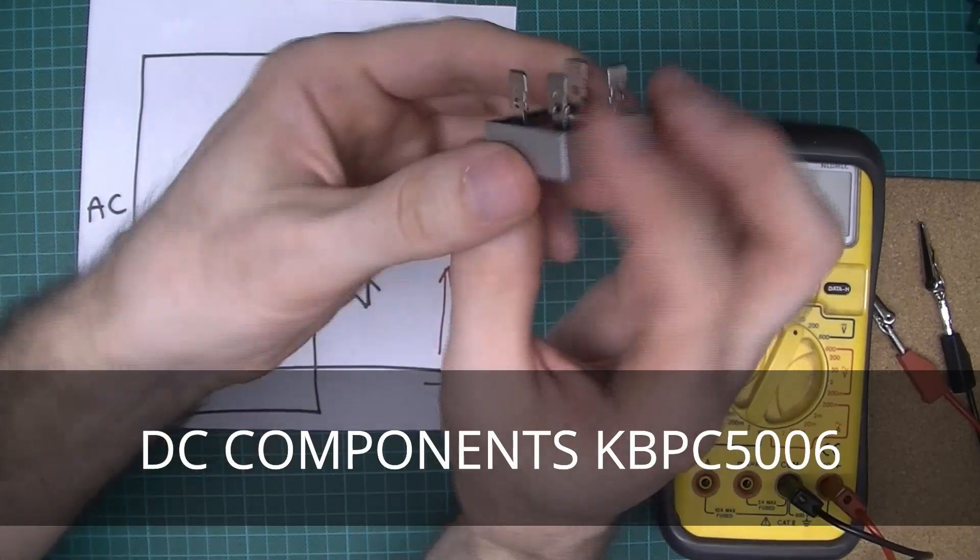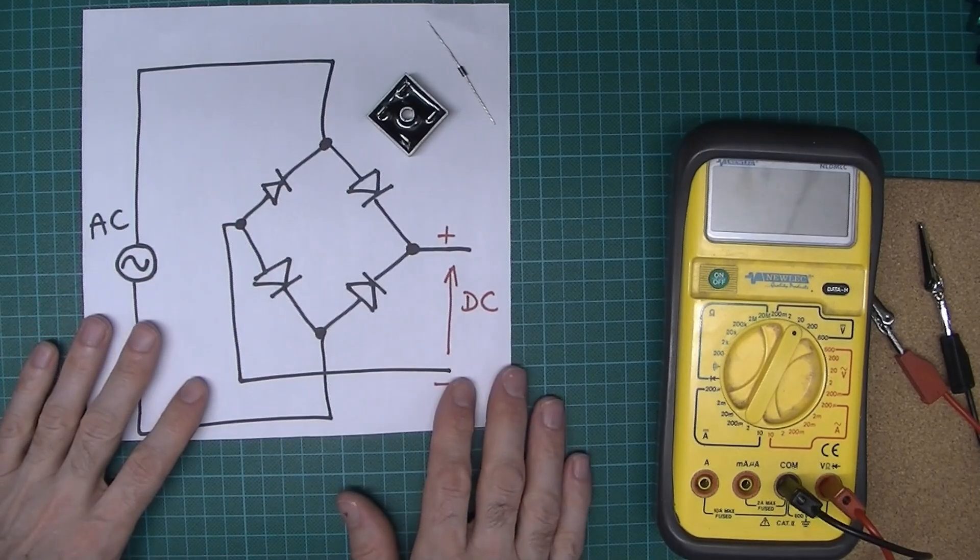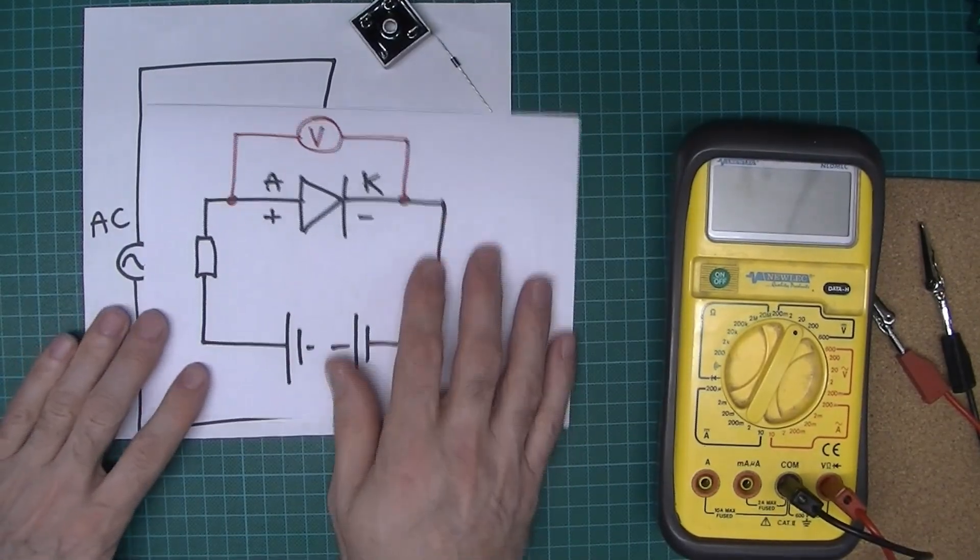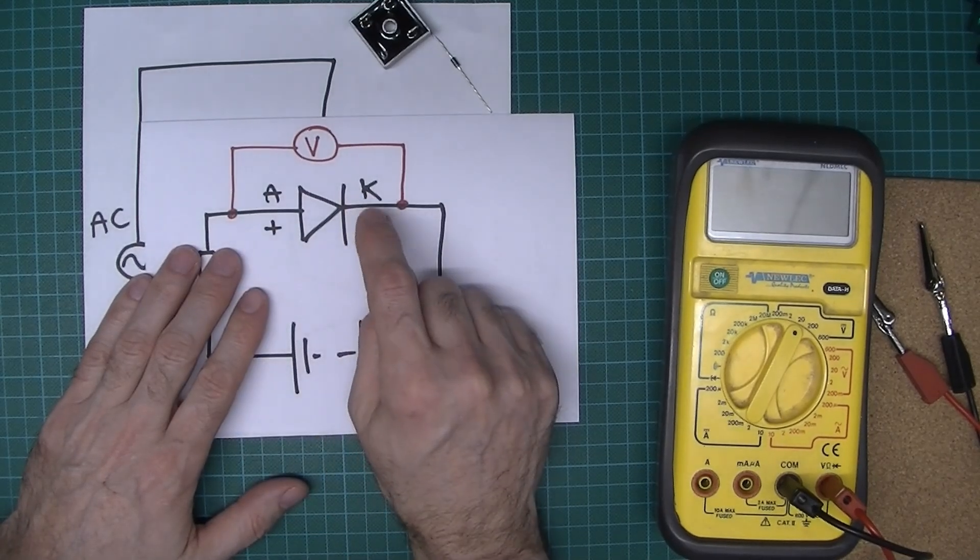Let's just go back to basics for a moment. Here's a diode: anode and cathode. Yes, cathode is spelled with a C, but the symbol we use is K.